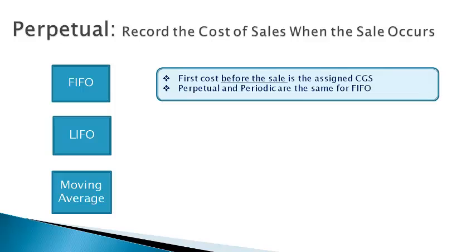Under FIFO, the cost of the item sold is the first cost purchased just before the sale. The first item purchased is always the same regardless of when the sale occurs. FIFO gives the same value for inventory and cost of goods sold under both the periodic and the perpetual method. The perpetual method records the sale and the cost of sales at the time the sale occurs.